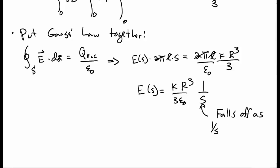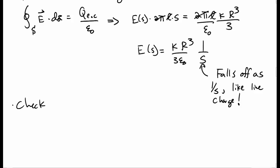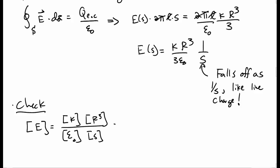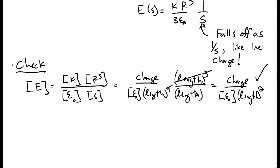That 1/s should ring some bells — it looks like a line charge. The electric field is falling off like a line charge outside, which actually makes a lot of sense: outside the cylinder, it should just look like a line. Checking dimensions: k gives charge per length⁴, R³ gives length cubed, and 1/s gives 1/length — giving charge over ε₀ times length squared, which are indeed the correct units for electric field.